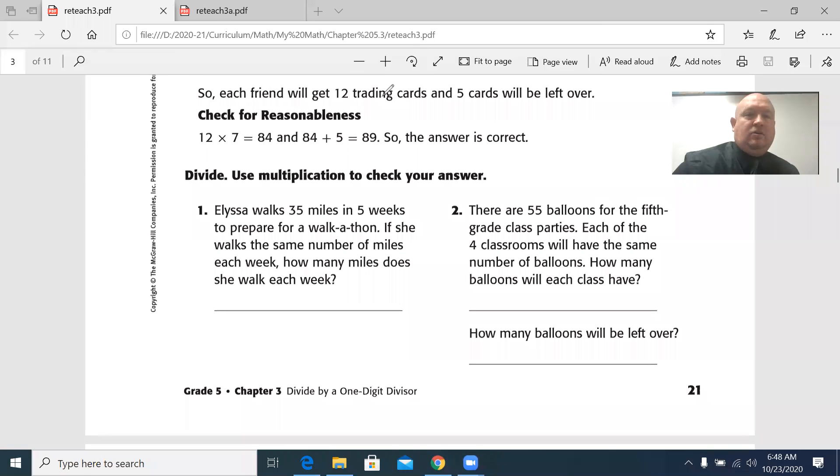So there's a lot here to unpack. So I'm going to get my drawing tool. Our main question is, how many miles does she walk each week? The numbers we have, 35 and 5. Does it matter that she's preparing for a walk-a-thon? No. We know that she walks the same number of miles each week. So we're going to be dividing 35 by 5.